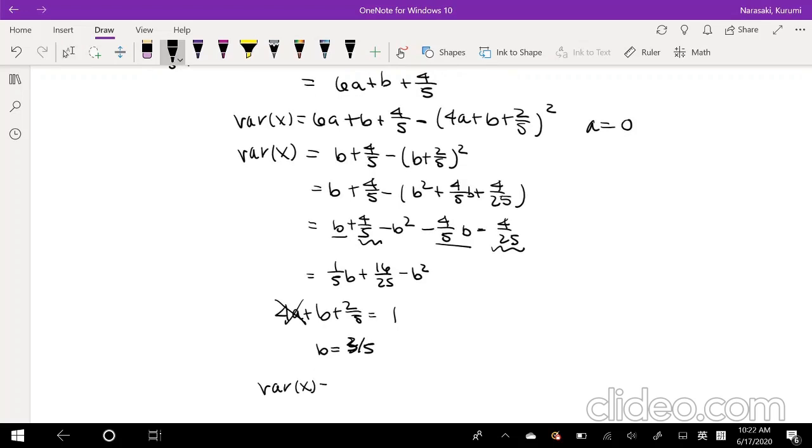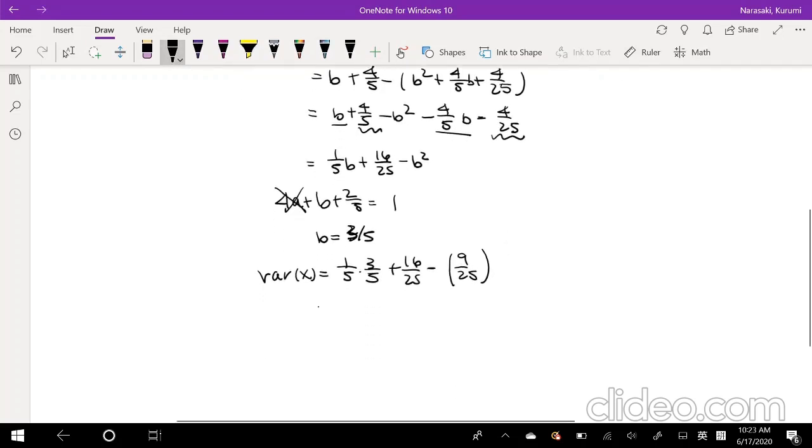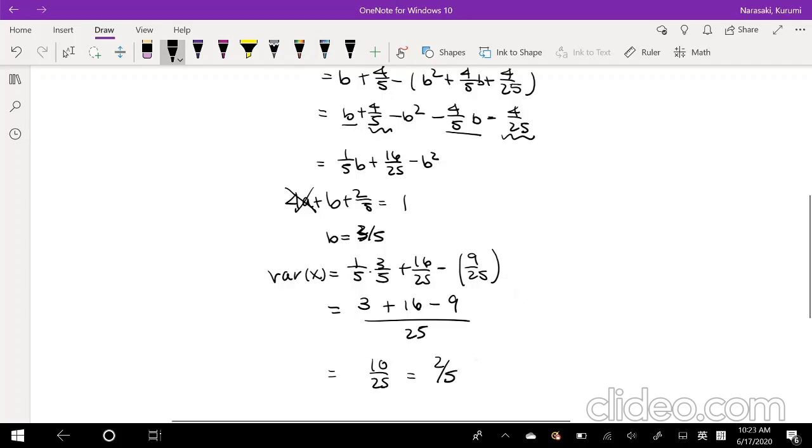So then we get our variance of X is equal to 1 fifth times 3 fifths plus 16 over 25 minus b squared, which is 9 over 25. So simplifying, now we get 3 plus 16 minus 9 over 25, which is also equal to 10 over 25, which is also equal to 2 fifths. So we get that the variance of X is equal to 2 fifths.